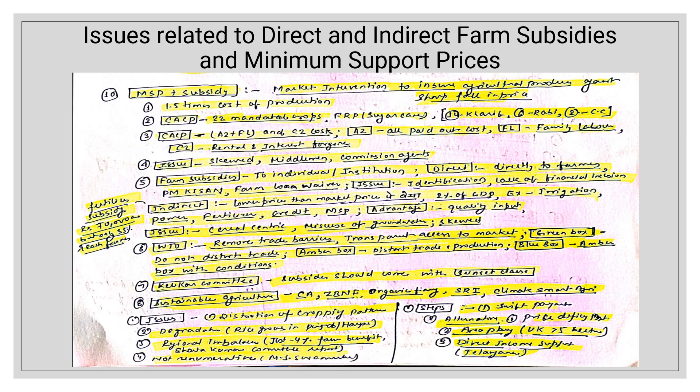Issues with MSP: it is skewed, meaning it does not reach everyone equally. Many middlemen and commission agents eat into the benefit in between. Now coming to farm subsidies — farm subsidies are of two types: direct and indirect. Direct subsidies are given directly to farmers, like PM Kisan or farm loan waivers, given via DBT into their accounts. The issue with direct subsidy is identification — not everyone can be identified, and lack of financial inclusion means no bank account, so DBT is not possible.